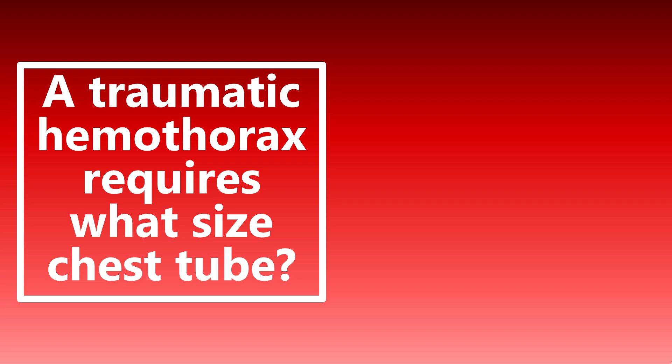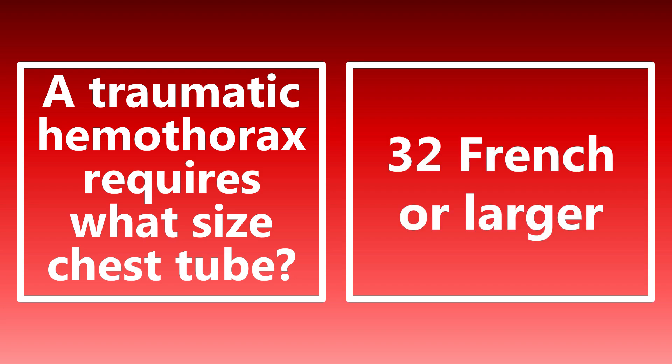A traumatic hemothorax requires what size chest tube? For the boards, the answer is going to be 32 French or larger. If you have a traumatic hemothorax, you're going to want a large bore chest tube — 32 French, maybe 36 French, even up to 40 French. There is a movement toward smaller bore pigtail or Wayne catheters, but the boards answer for a traumatic hemothorax is 32 French or larger.